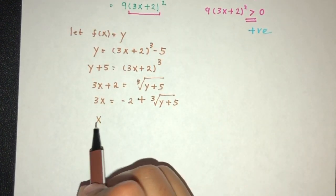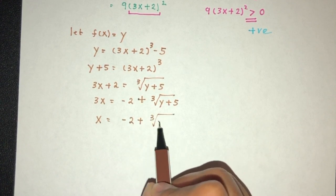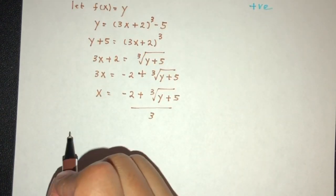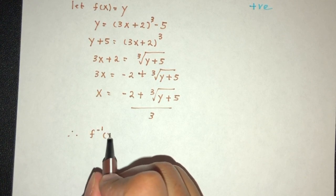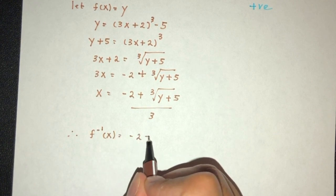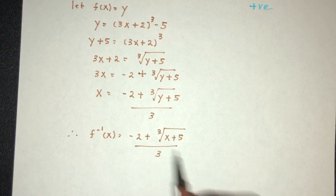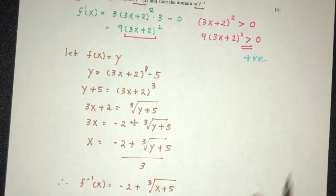So finally, x has to be minus 2 plus cubic root of y plus 5 divided by 3. Now obviously we have to write this down in terms of x, so f inverse is in terms of x, that will be minus 2 plus cubic root x plus 5 over the value of 3. Now we have to also find the domain of f inverse.